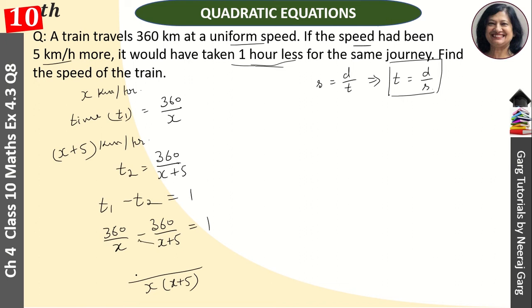Taking the LCM as x into x plus 5, and simplifying the numerator, this becomes 1800 minus 360x upon x square plus 5x. That is equal to 1.